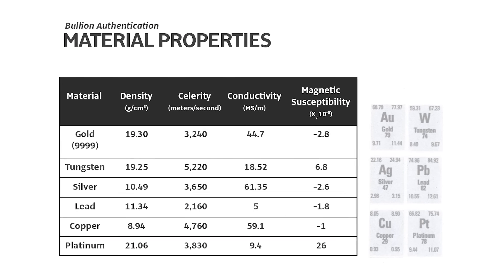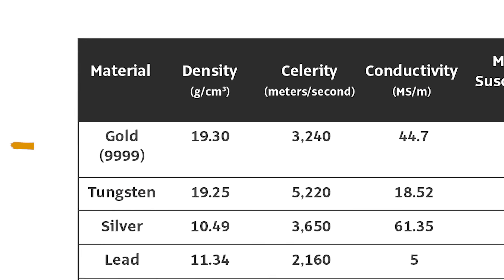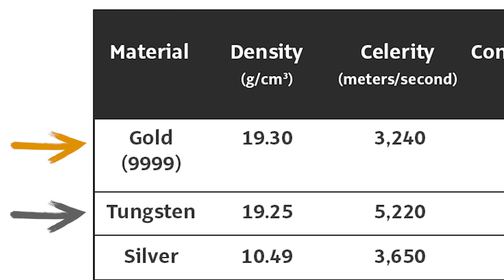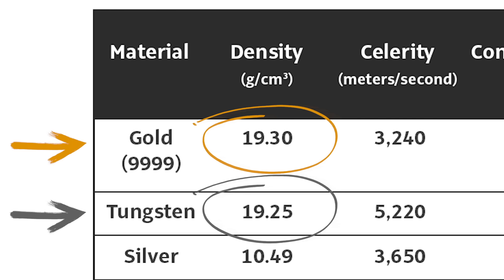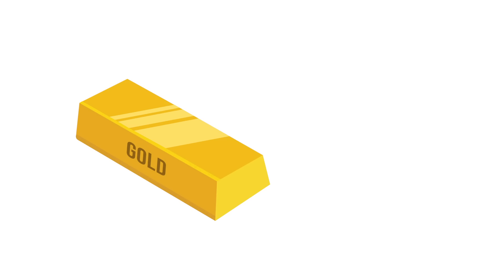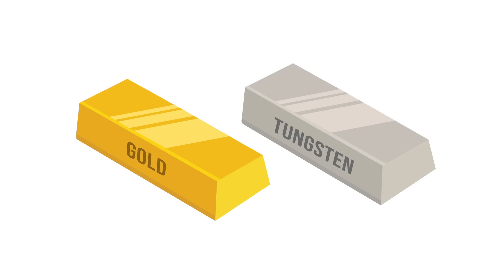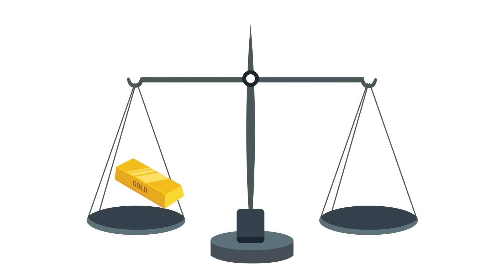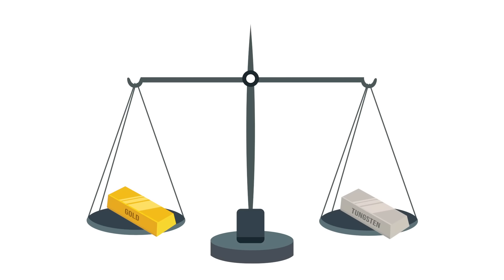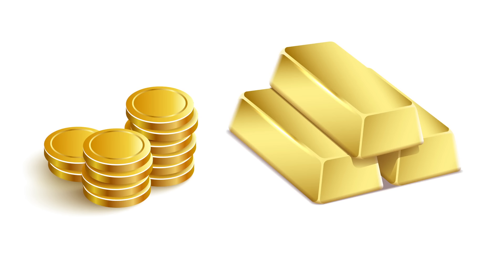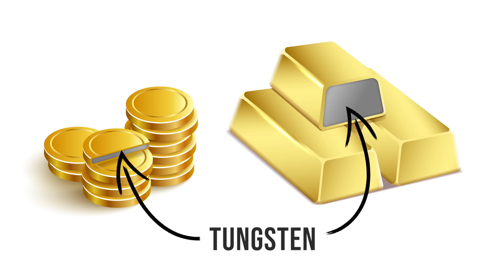From this table of material properties, you will notice that the density of gold and tungsten are extremely close, with the density of gold being 19.30 grams per cubic centimeter, while tungsten's density is 19.25 grams per cubic centimeter. This means that a one-ounce gold bar and a one-ounce tungsten bar will look very similar in dimensions, and if you weigh them, they will yield similar results on a scale. Thus, fake bars tend to be made of tungsten with a thick gold coating.